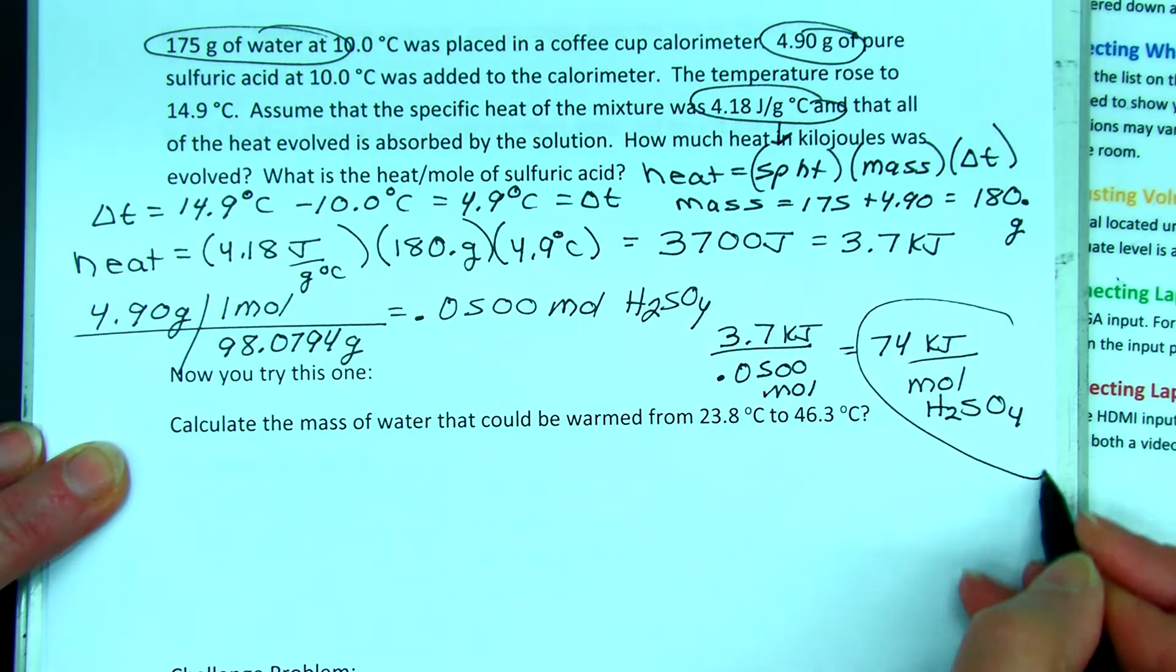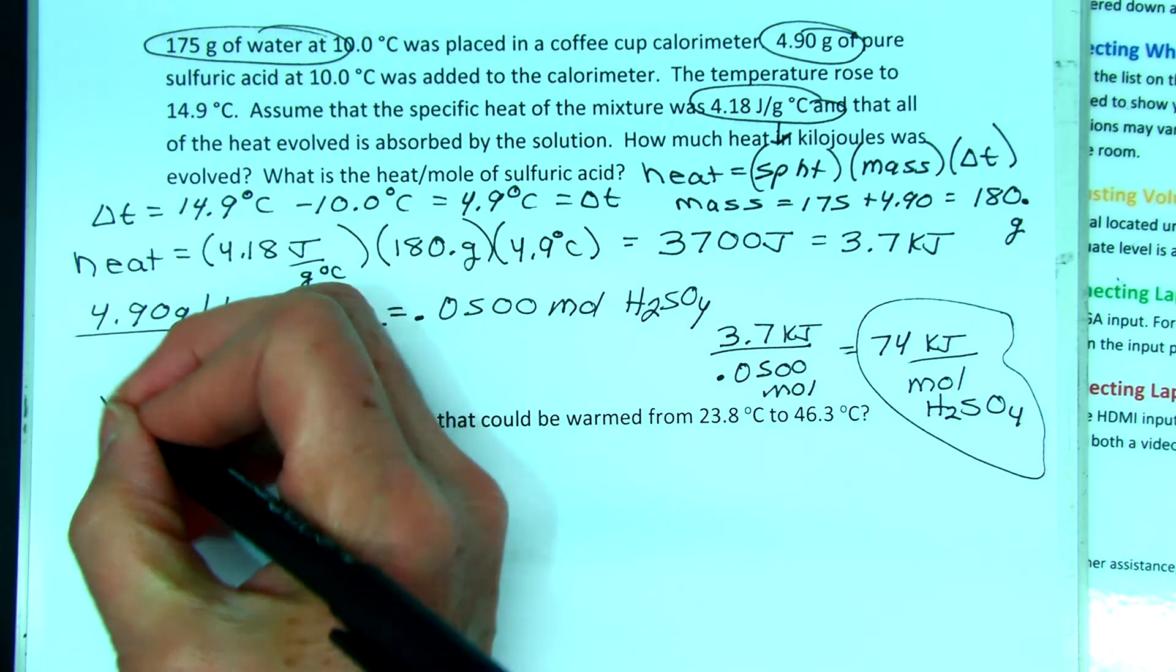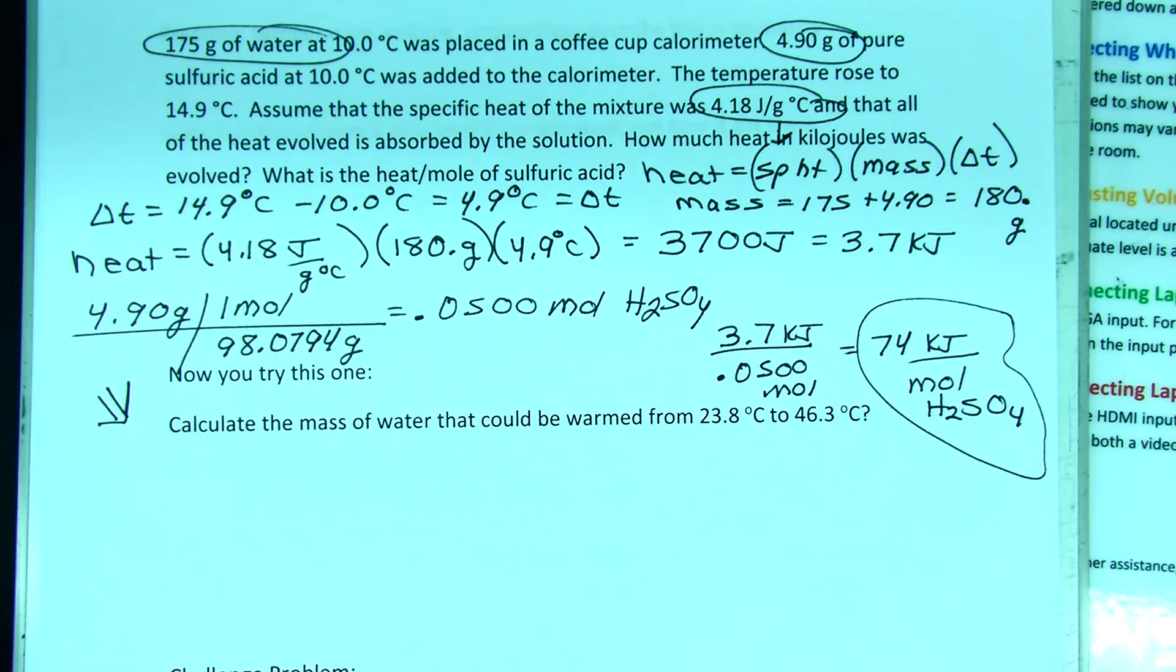That's the first calorimetry problem. You will see some calorimetry problems of different types where it talks about having a bomb calorimeter with oil in the calorimeter. Those are on the homework for Chapter 6. I will see you tomorrow for lab. That wraps up things for today.